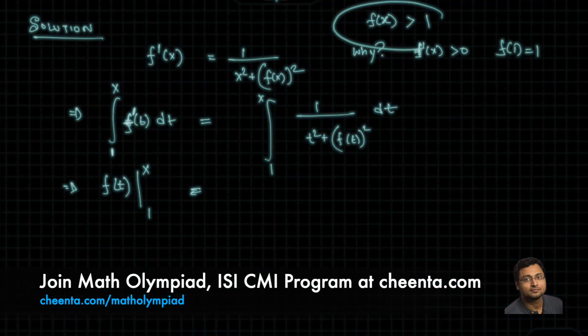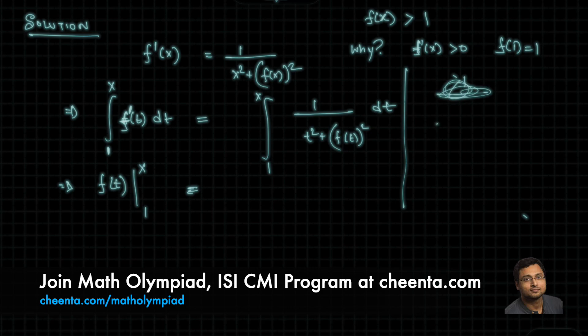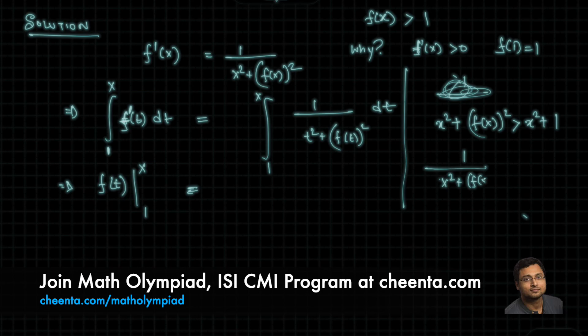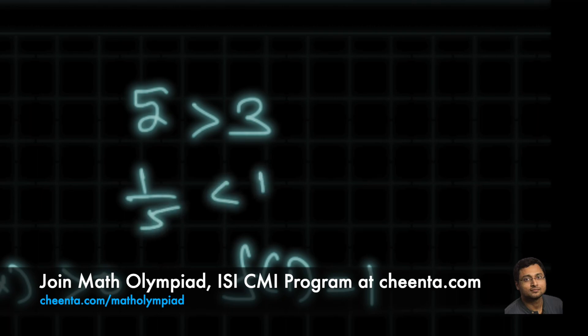Okay, now that is the result that we are going to use. See, f of x is greater than 1. So, x square plus f of x whole square is always greater than x square plus 1. I'm just replacing f of x by 1, something smaller than f of x, of course. Now, if I flip it, the inequality will also flip. So, I flipped it, the inequality will also flip. Of course, if 5 is greater than 3, then 1 over 5 is less than 1 over 3. The largest stuff goes at the bottom and hence the inequality flips.